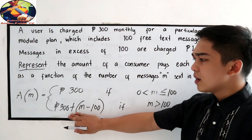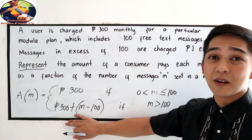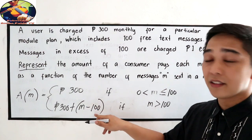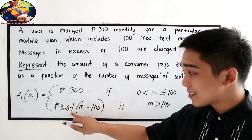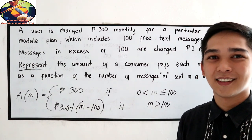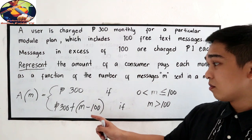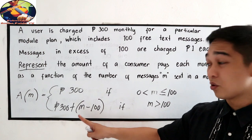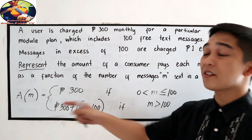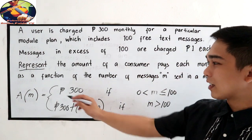Let's try to compute. If the consumer sent 110 messages, they exceeded by 10. So: 110 minus 100 equals 10, plus 300 equals 310 pesos — that is their bill for the month. Another example: if they sent 200 messages in a month, then M = 200. So 200 minus 100 equals 100 excess, plus 300 equals 400 pesos. That is how we represent this situation as a piecewise function.